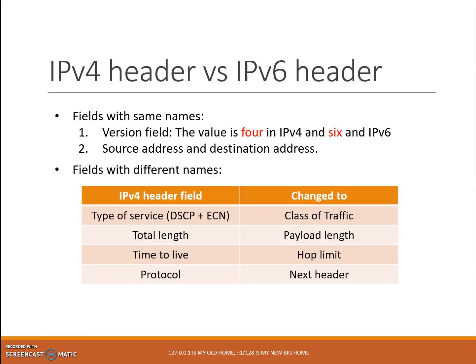Next, the IPv4 fields that have been changed in IPv6. Number 1: type of service — DSCP plus ECN — has changed to traffic class. Both fields in IPv4 and IPv6 use 6-bit DSCP for packet classification and 3-bit ECN for congestion control.